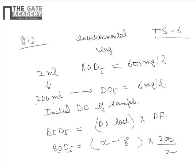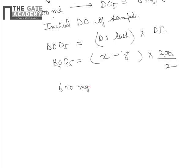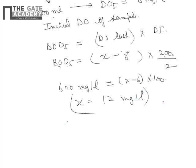x comes out as 12 mg per liter, where x is DO1 or DO initial of the sample. So the correct answer for question number 12 is A.